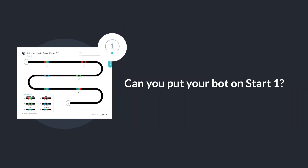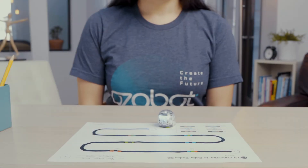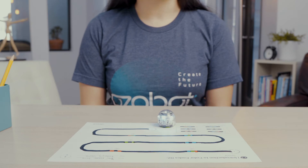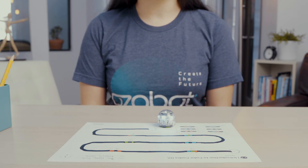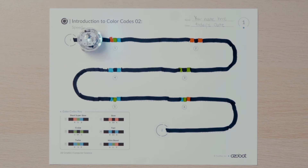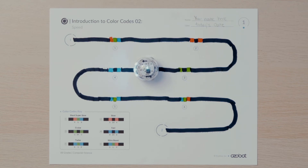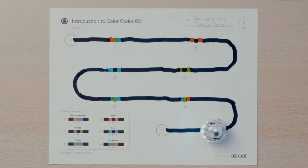Can you put your bot on start one? Then watch your bot as it inputs the sequence of colors for each color code and outputs a change in speed. As you watch your bot move along the pathway, did you notice any changes in speed? Let's watch my bot in action. I will put my bot on start one. As my bot moves over the color code RGB, the LED light on top changes color to match the sequence. This lets me know that my bot has received the first instruction or program. Next, my bot follows instructions and moves at a super slow speed. My bot continues to follow each color code increasing in speed all the way to the end of the path.